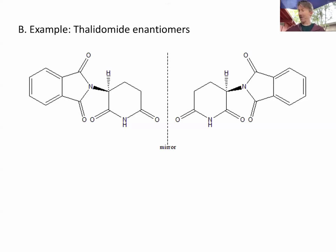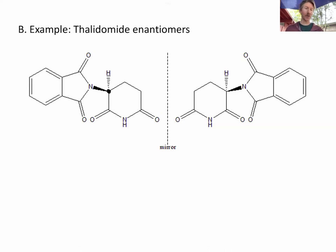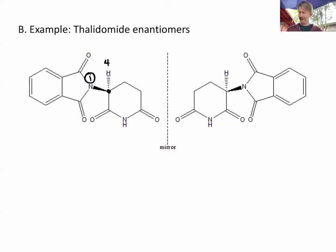Let's go back to our other ones and figure these out. Thalidomide enantiomers — same picture we saw before — this one is our chiral center. Let's do our priority order, where priority is going to get a little more complicated. We know that hydrogen is four, we know that nitrogen is one, because nitrogen has a higher atomic number than either of the carbons.